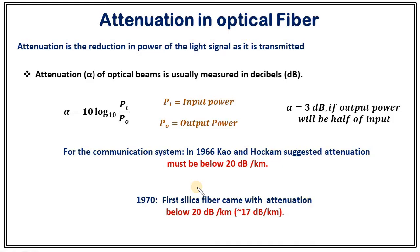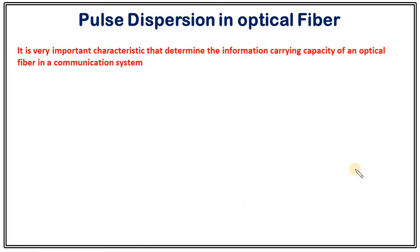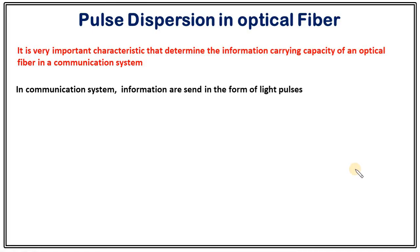Attenuation is not the only factor deciding how long a signal can be transmitted in optical fiber. There is another factor called pulse dispersion, which is a very important characteristic that determines the information carrying capacity of an optical fiber in a communication system. In a communication system, information is sent in the form of light pulses — a light pulse is treated as one, no light pulse is treated as zero. So in the form of ones and zeros, information is sent. Once sent at the input end, it is received at the output end, and if the output end is able to resolve that signal, it will be able to extract the information.